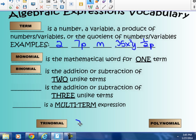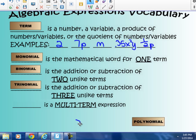Is the addition or subtraction of three unlike terms. So, you probably saw like tricycle, trinomial, tri, triangle is the addition or subtraction of three unlike terms. And the last one here, poly meaning many, a polynomial is a multi-term expression.